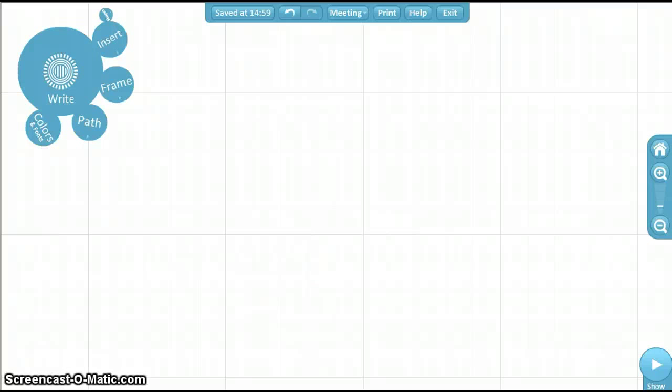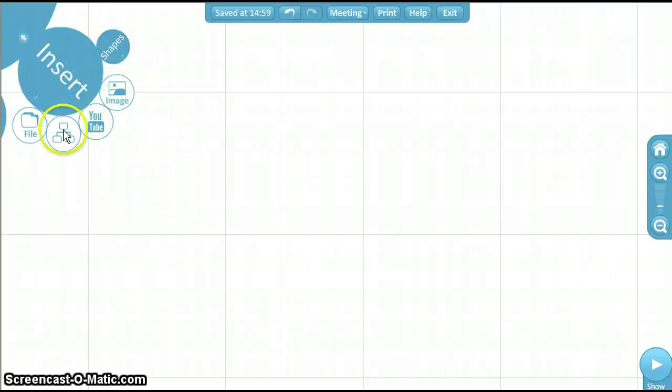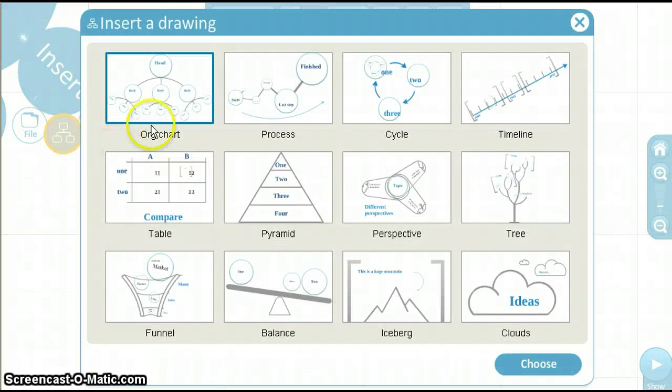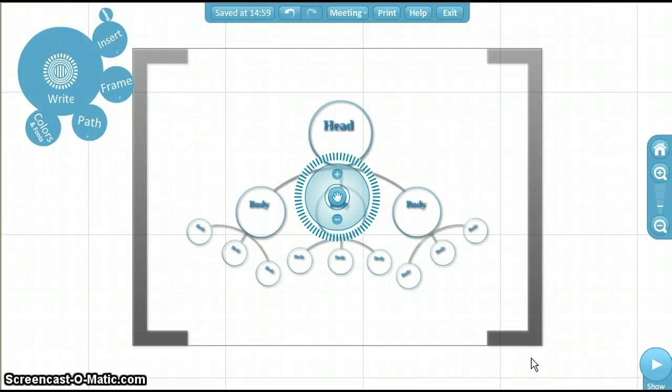Let's practice creating paths with the organizational chart we saw earlier. Go back to Insert, and then Organizational Chart, and for our purposes in this video we will choose the first one. Go back to Path and choose Add.